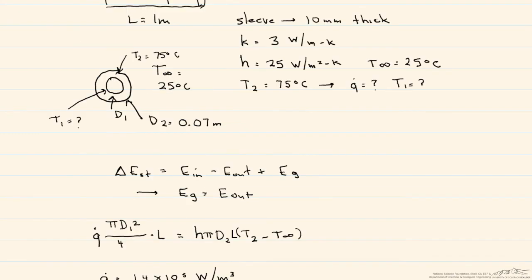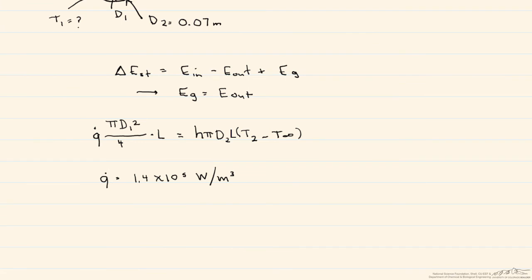The next thing we need to find is that T1. So in order to do so, we're going to use that generation term to find the heat transfer rate. And the only place that we can do that is at the outside of the generating rod. So our heat transfer rate is going to be equal to that Q-dot times our volume. And when we solve for that heat transfer rate, we end up with 275 watts.